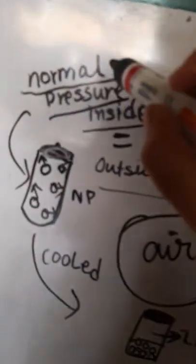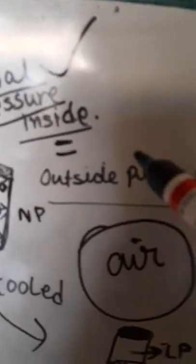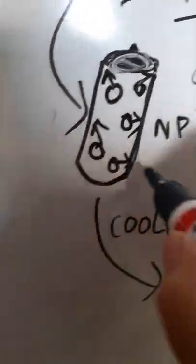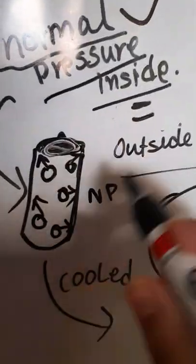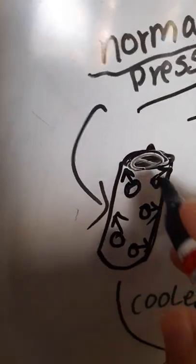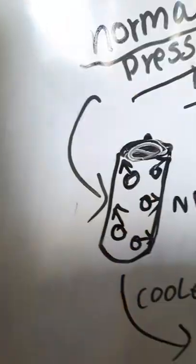It remained as it is. The normal pressure means the pressure inside the bottle was equal to the pressure outside the bottle. Okay, so it had air inside it, right? And air exerts pressure in all ways: sideways, upwards, downwards, in all possible ways.